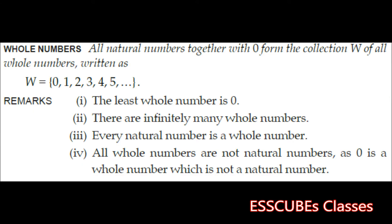What is a whole number? All natural numbers taken together with 0 is known as a whole number. It is conventionally represented by W and contains the numbers starting from 0, 1, 2, 3, 4, and so on. That means natural numbers plus 0 becomes whole numbers. The least whole number is 0, and there are infinitely many whole numbers. A 0 is a whole number which is not a part of the natural number family.